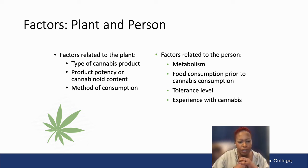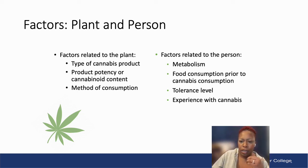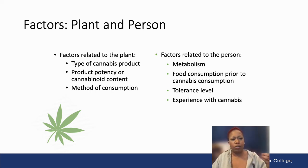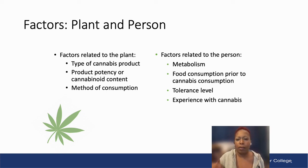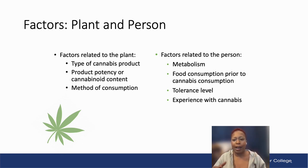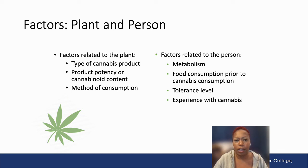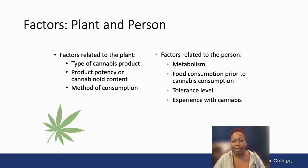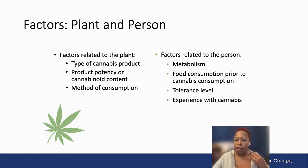When we talk about different consumption methods, there are a couple of factors that affect how cannabis is going to affect you. Those two factors are the plant and the person. Factors related to the plant include the type of cannabis product, how potent it is — the cannabinoid content — such as the THC percentage versus CBD, CBN, or any other cannabinoids. The method of consumption is also a plant-side factor, and different methods of consumption affect the body in different ways.